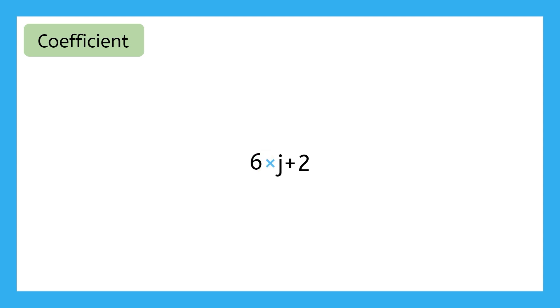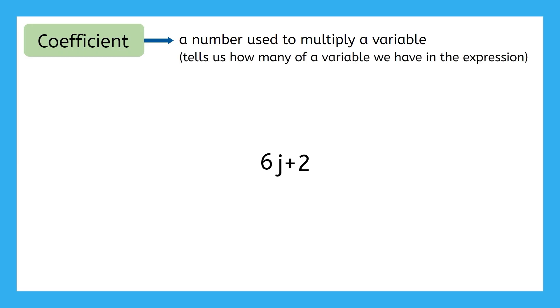But in math, we like things to be short and concise, so we don't have to write the multiplication sign. Instead, by putting a coefficient in front of a variable, we are showing that these two are glued together by multiplication. A coefficient is important because it's a number that is used to multiply a variable. Coefficients tell us how many of a variable we have in the expression. In this case, we have 6 times J, or 6 Js.